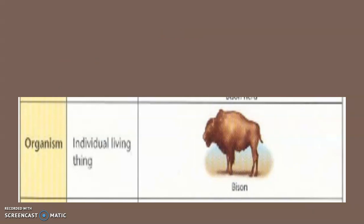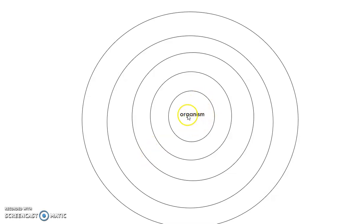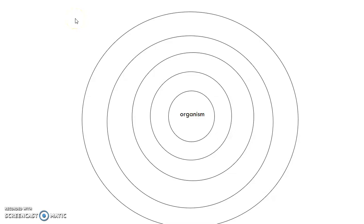Now we're going to go into the different levels of organization. An organism is an individual living thing — just one thing. If you're talking about one frog, that's an organism. If you're talking about one bison, that's an organism. It's the smallest level we're discussing at this point. You'll be filling in the other sections in your notes.